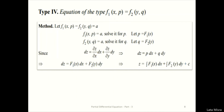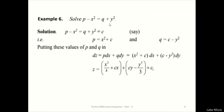Example: Solve p - x² = q + y². This is Standard Form 4. Separating: p - x² = q + y² = c. So p = x² + c and q = c - y². Using dz = p dx + q dy and integrating gives z = x³/3 + cx + cy - y³/3 + c₁. This is the required solution by Standard Form 4.